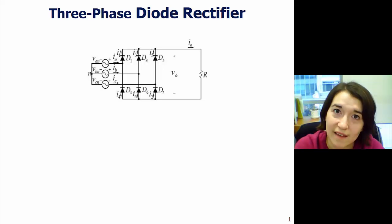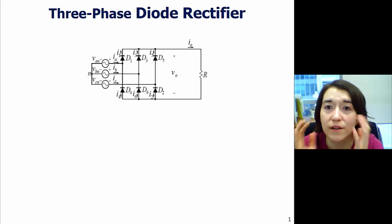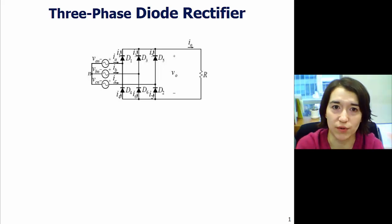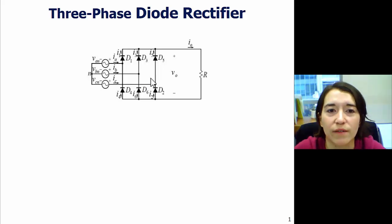So, we want to take this AC power and turn it into DC power. How do we do that? Well, we have this circuit here.